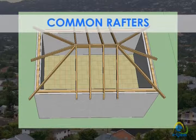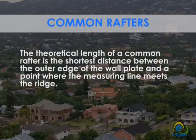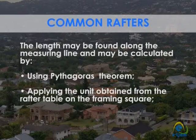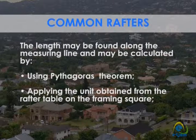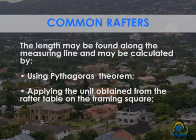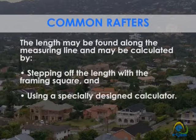Before we do this, we first need to determine its length. The theoretical length of a common rafter is the shortest distance between the outer edge of the wall plate and a point where the measuring line meets the ridge. The length may be found along the measuring line and may be calculated by using Pythagoras' theorem, applying the unit obtained from the rafter table on the framing square, stepping off the length with the framing square, or using a specially designed calculator.